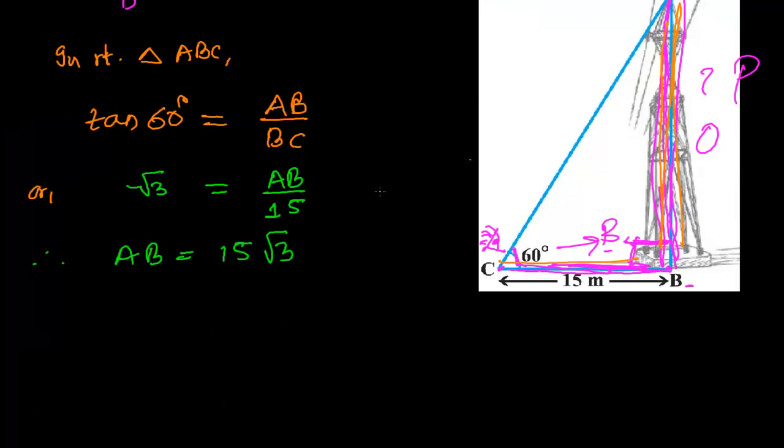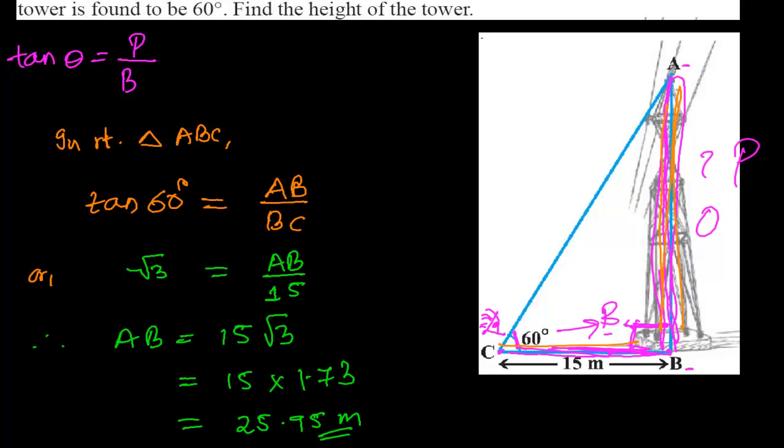Therefore AB = 15√3. If you go in point form, 15 times 1.73 gives approximately 25.95. So 25.95 meters is the height of this tower.